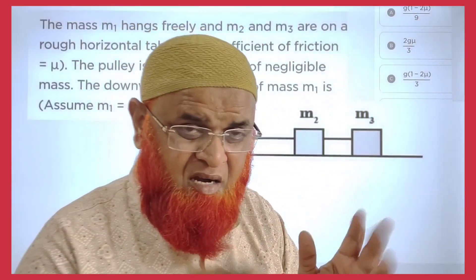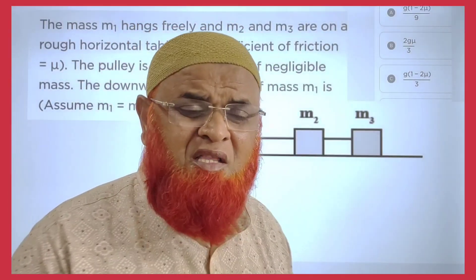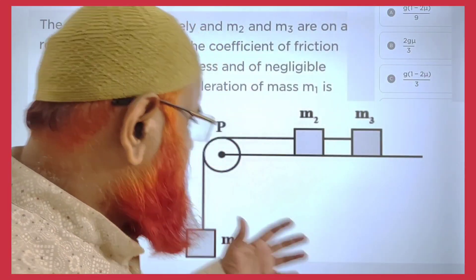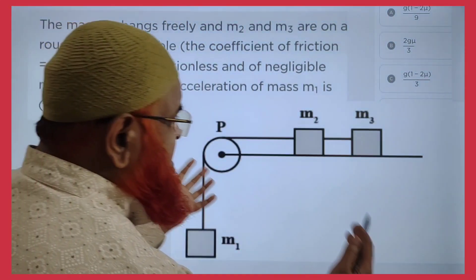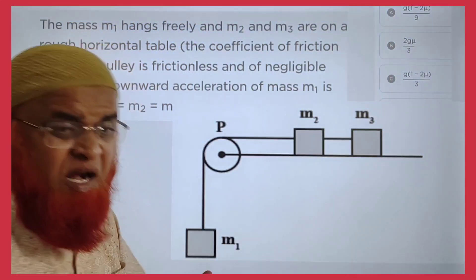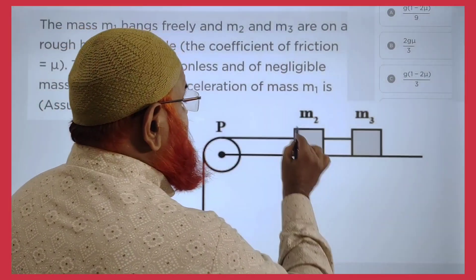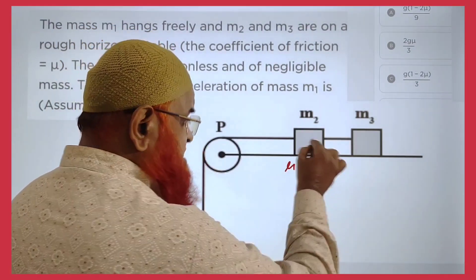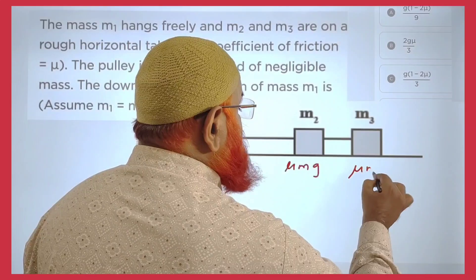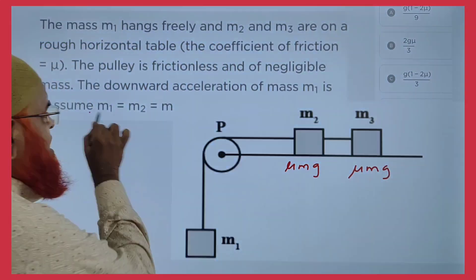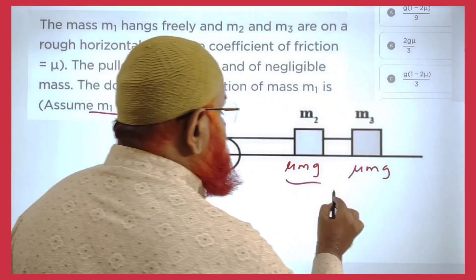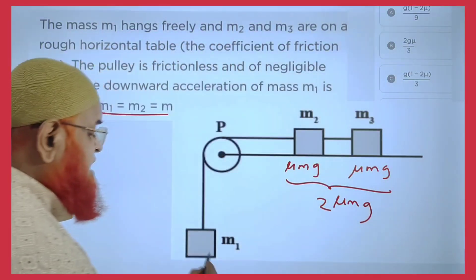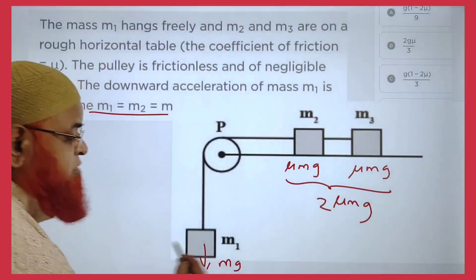You can solve this friction problem without any free body diagram in just seconds. Now in this next problem, we need to find acceleration. There are three masses of equal value. The friction on each of the two table masses is μmg, so combined friction is 2μmg. In the downward direction the hanging mass contributes mg.